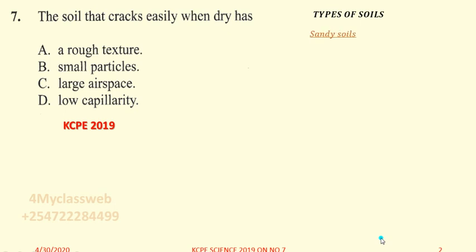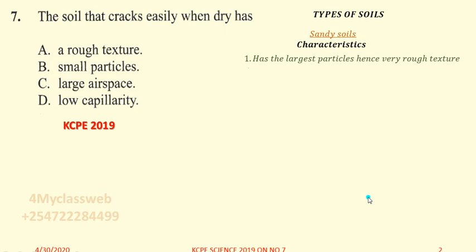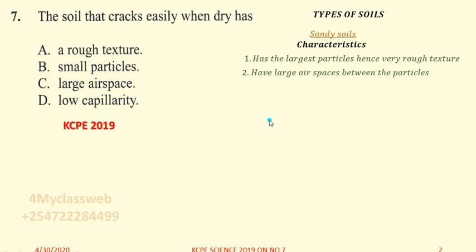Now let us look at the second type of soil — sandy soil. Its characteristics are: number one, it has the largest particles, hence a rough texture. Unlike clay soil which has very small particles, sandy soil has the largest particles. If you feel them between your fingers, the texture is rough — remember, texture is the way you feel something, either rough or smooth. It also has large air spaces between the particles.